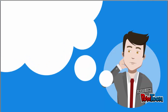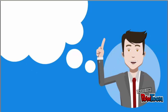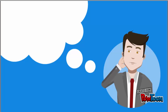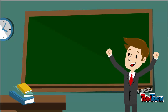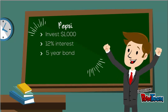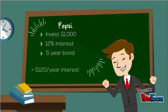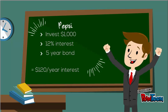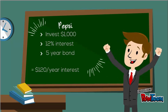So let's pretend that you have $1,000 to invest and you're trying to decide whether to invest in Pepsi or Coca-Cola — two similar companies, similar industries. If you invest in Pepsi, they're offering a 5-year bond for your $1,000 at a 12% interest rate. This means you'd get $120 per year in interest and you'd receive your $1,000 back at the end of the 5 years.